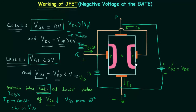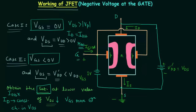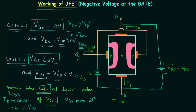With both PN junctions reverse biased, the width of the depletion region increases. On increasing VDS, the width increases further — more at the top than at the bottom — and after some time it appears that the two depletion regions are touching each other. This condition is known as the pinch-off condition, and the corresponding drain-to-source voltage is called the pinch-off voltage. The pinch-off voltage in case number two is lower than in case number one because the gate is negatively biased.